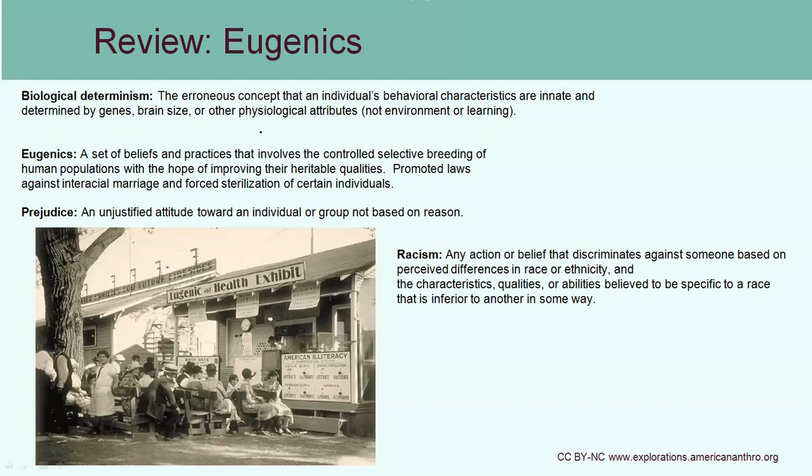Historically, when we first looked at differences amongst populations — looking at superficial physical differences like skin color or facial features — people believed in something called biological determinism. That was the idea that these different groups would have differences in things like their genes and their brain size, and therefore one might be more intelligent than the other, or more advantageous than the other.